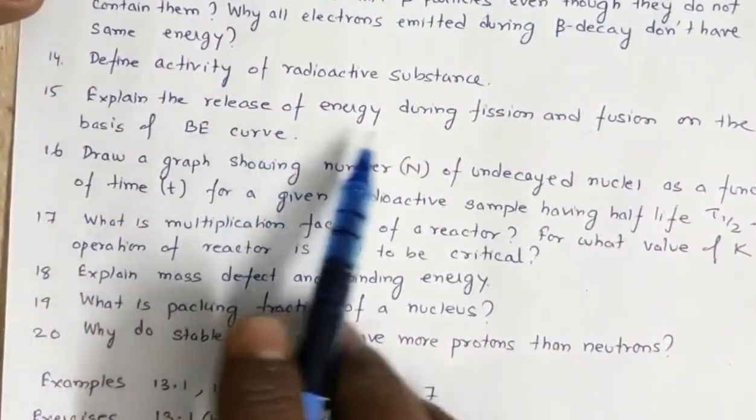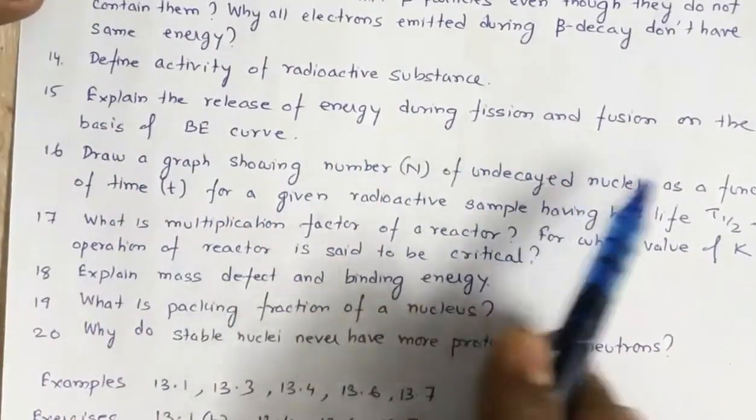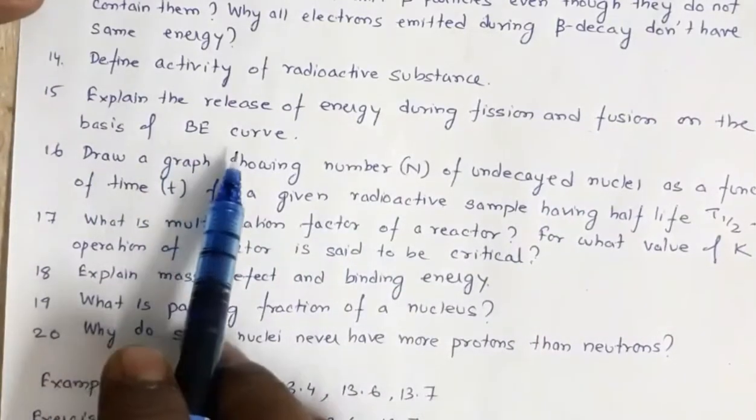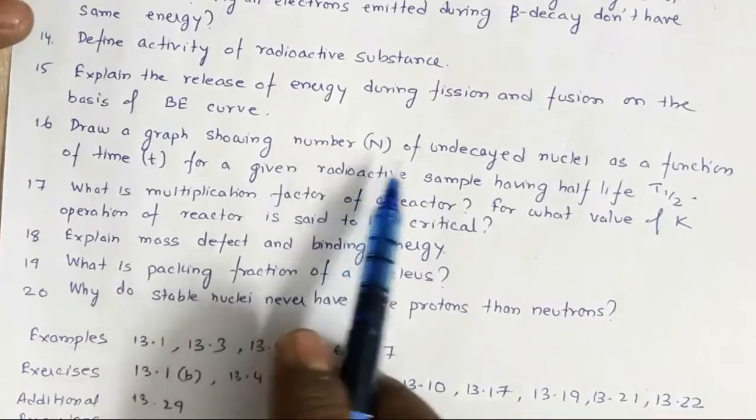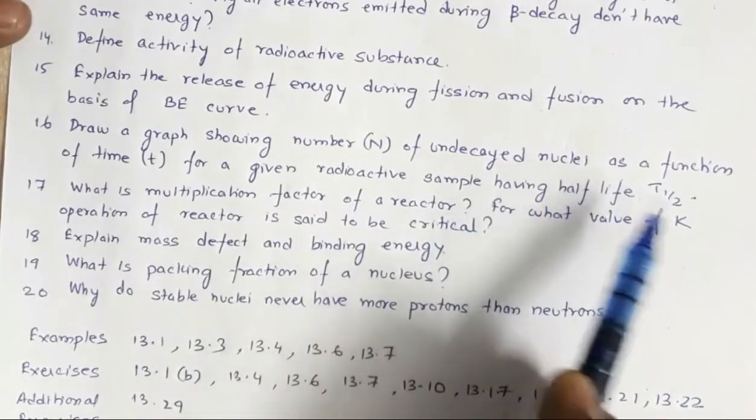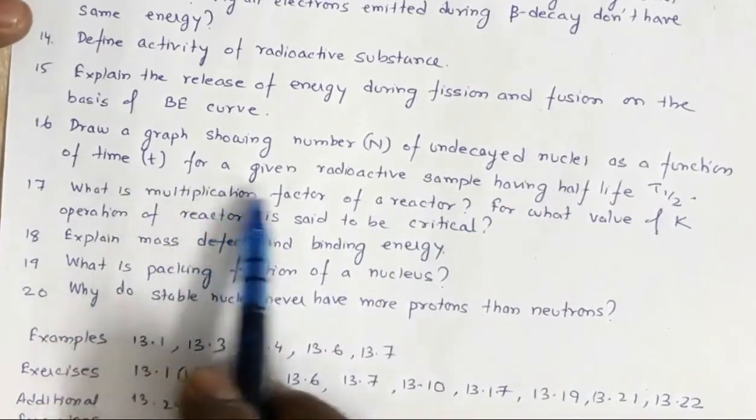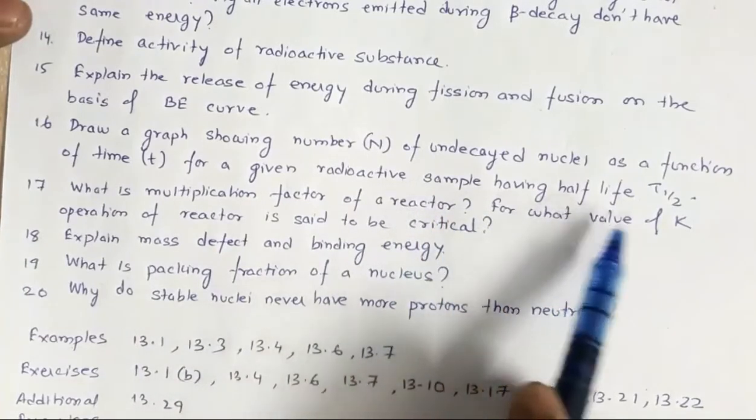Number 15: Explain the release of energy during fission and fusion on the basis of binding energy curve. Draw a graph showing the number N of undecayed nuclei as a function of time t for a given radioactive sample having half life T_half.